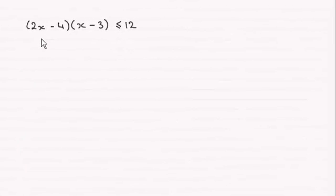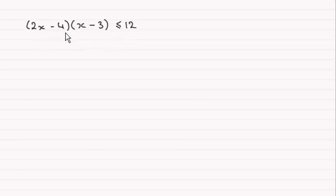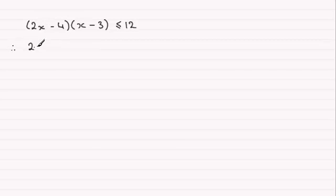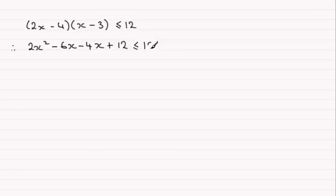For this question we've got to solve this inequality: 2x minus 4, multiplied by x minus 3, is less than or equal to 12. To do this we need to expand the brackets first. So we get 2x squared, then 2x times minus 3 which is minus 6x, then minus 4 times x is minus 4x, and minus 4 times minus 3 is plus 12, and that's going to be less than or equal to 12.